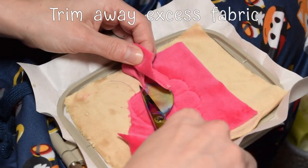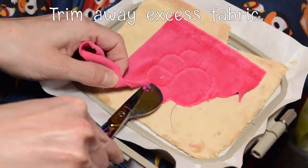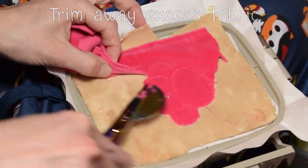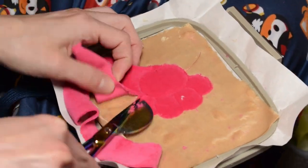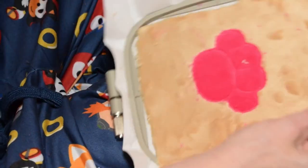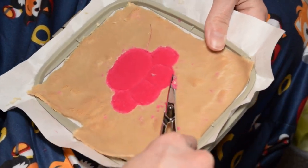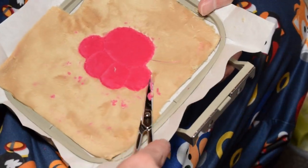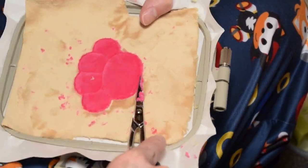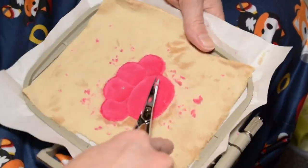Now you need to trim away the excess fabric. I start with a pair of duckbill scissors and then clean them up with curved embroidery scissors. If you don't have duckbill scissors, you can just use a normal pair of fabric scissors. And if you don't have curved embroidery scissors, I'd highly recommend getting a pair. It's very hard to get clean applique without them and they are one of my favorite tools in plush making.